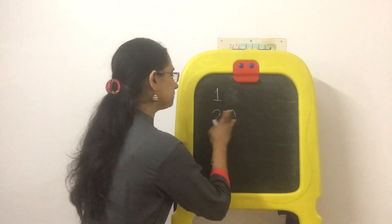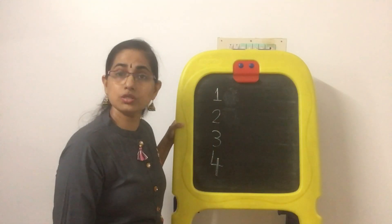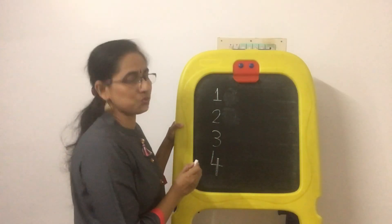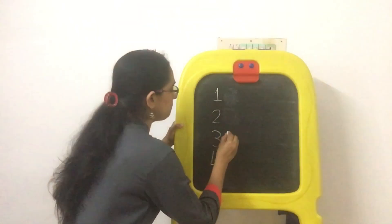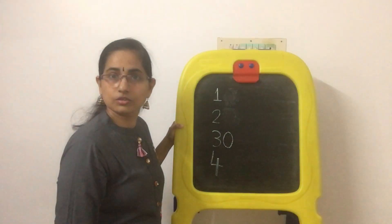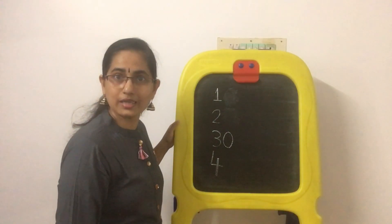Then number three asked zero, 'Please, why don't you come and stand along with me?' Now the value of three is thirty! Zero is so happy and so thrilled. He realizes that when he is standing along with some number, he has a value. Kids, you all understood the value and concept of zero, right?